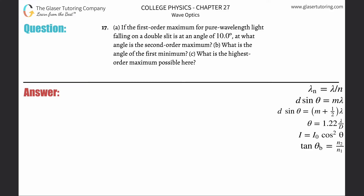Number 17, letter A: if the first order maximum for pure wavelength light falling on double slits is at an angle of 10 degrees, at what angle is the second order maximum? Since we're talking about maximums, we need the diffraction formula for double slit maximum: the distance between the slits multiplied by the sine of the angle equals the order multiplied by the wavelength.